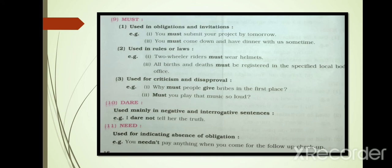Must also used for criticism and disapproval. For example: Why must people give bribes in the first place? Must you play that music so loud? Next modal auxiliary: Dare. Dare is used mainly in negative and interrogative sentences. For example: I dare not tell her the truth.